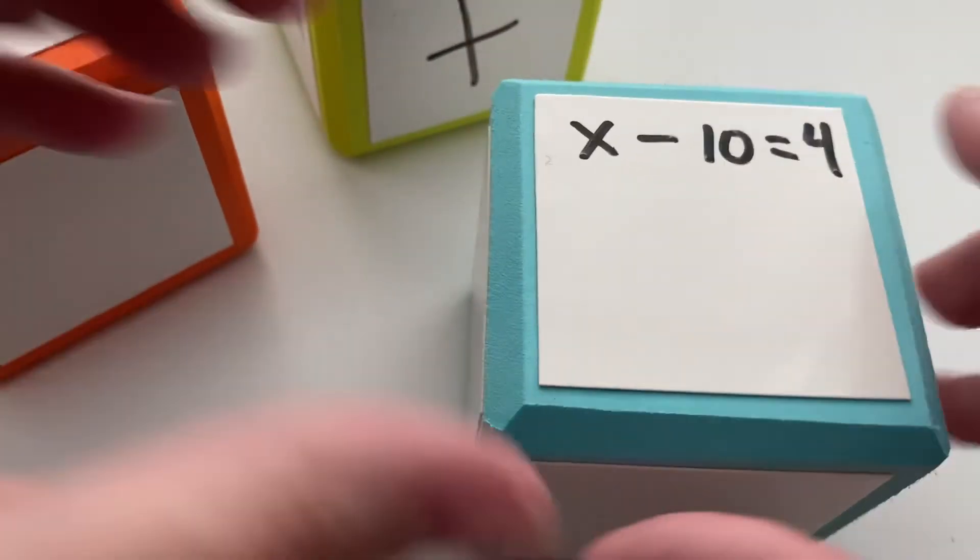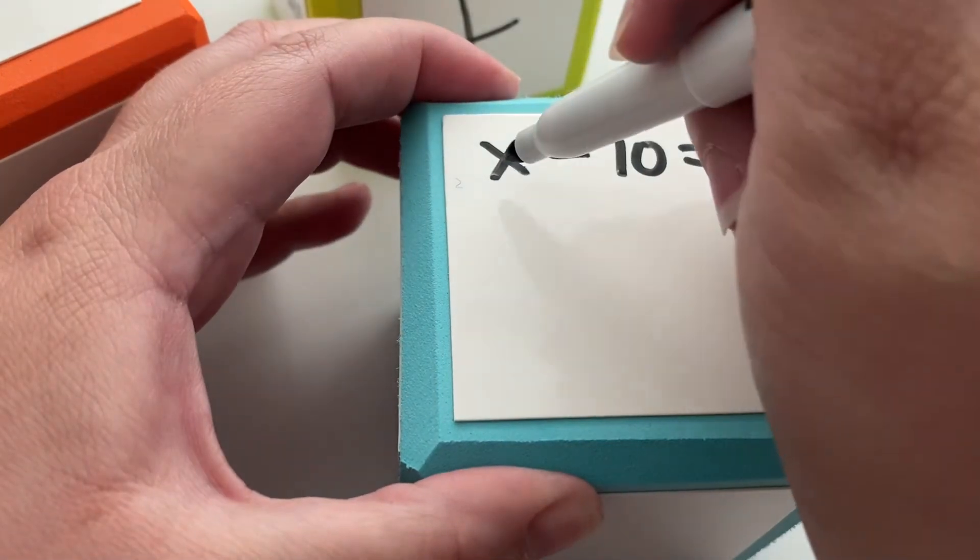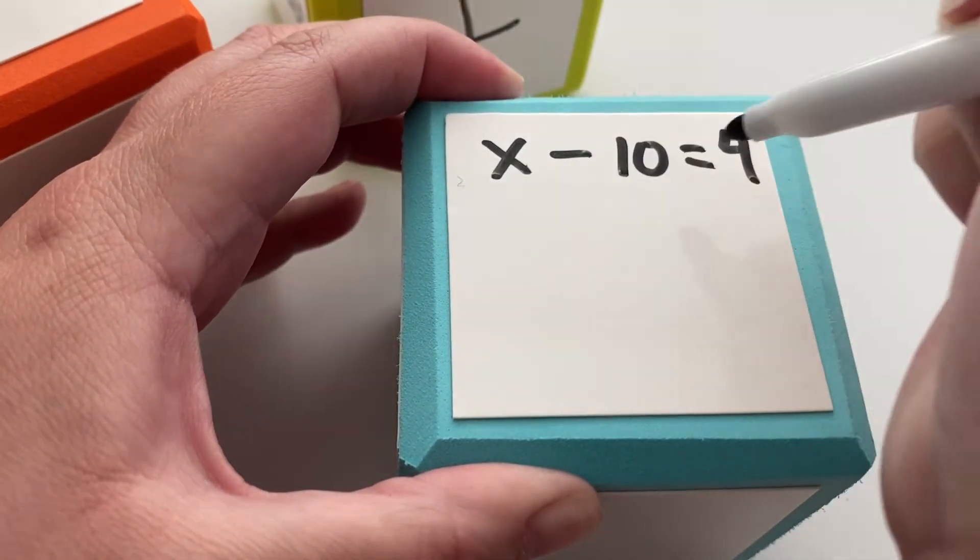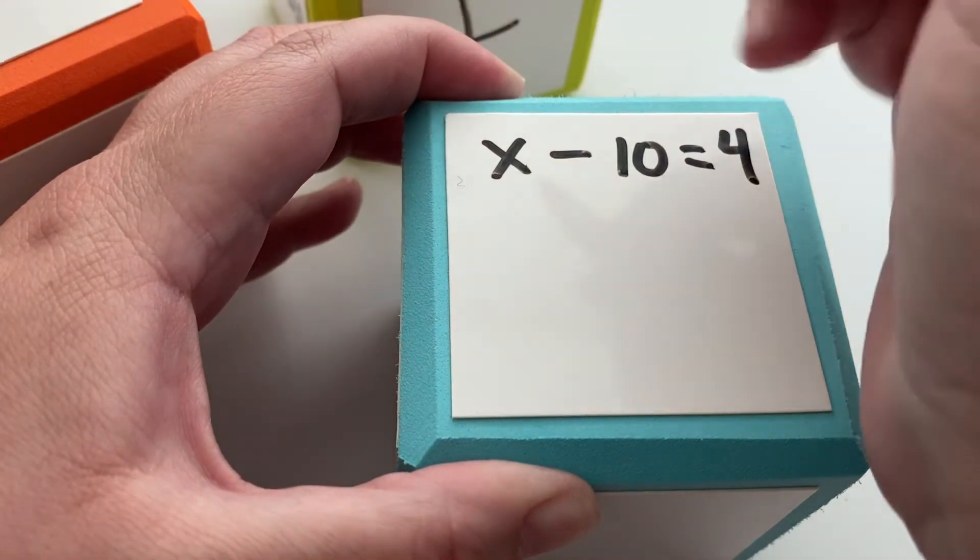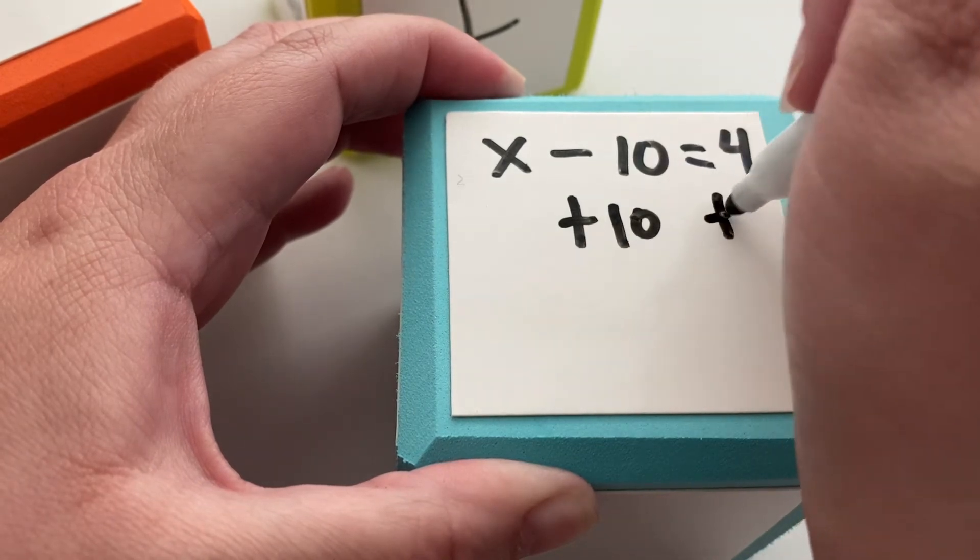What if it is subtraction? So we have x minus 10 equals 4. Something minus 10 is equal to 4. Well we can do the inverse operation, which would be plus 10 to both sides.